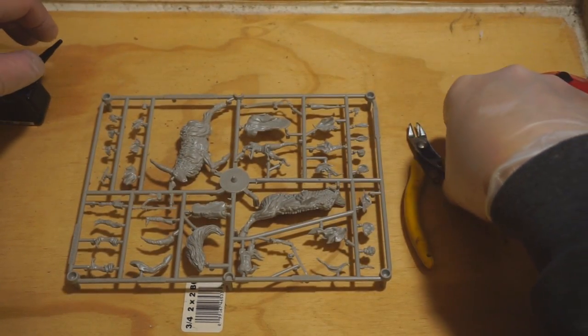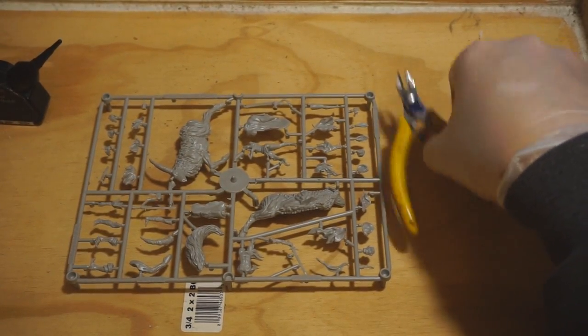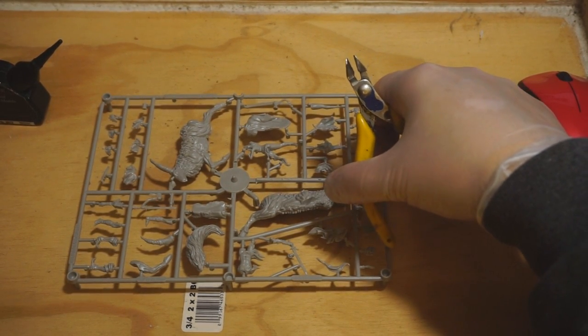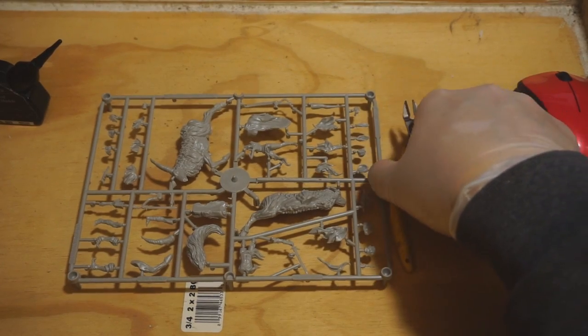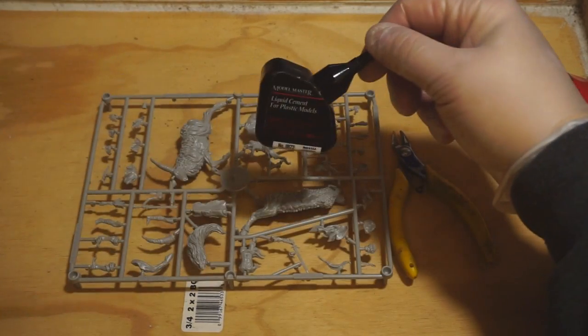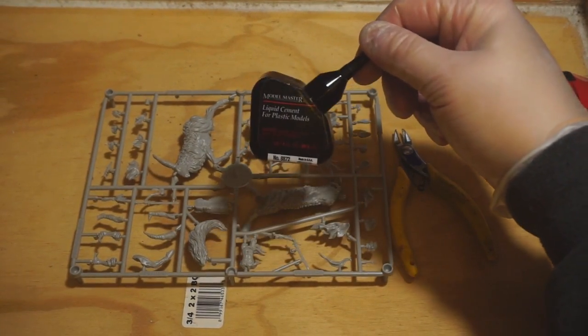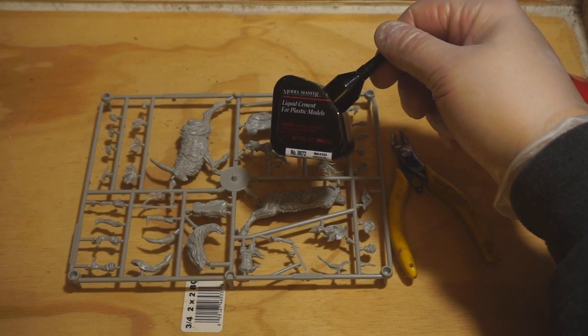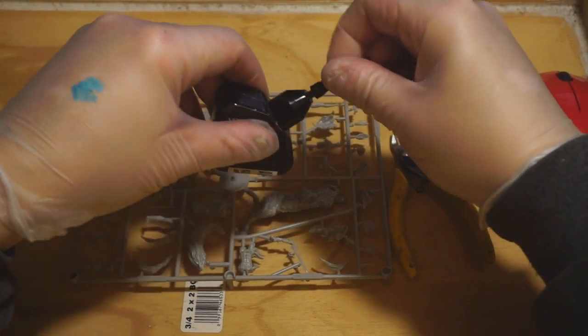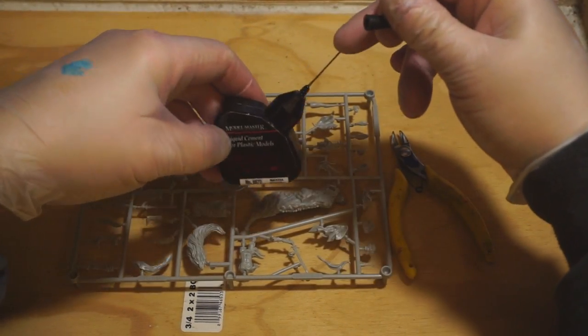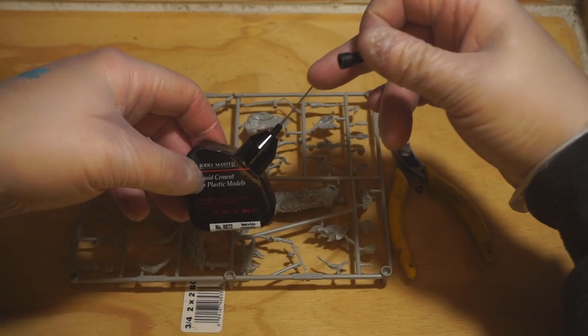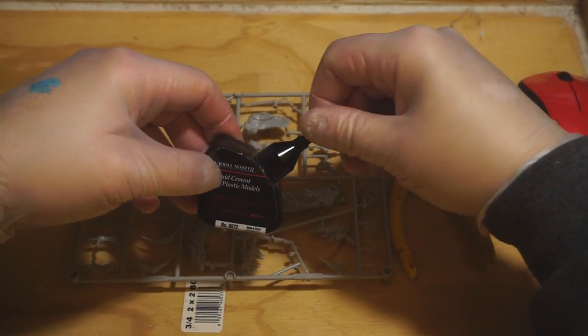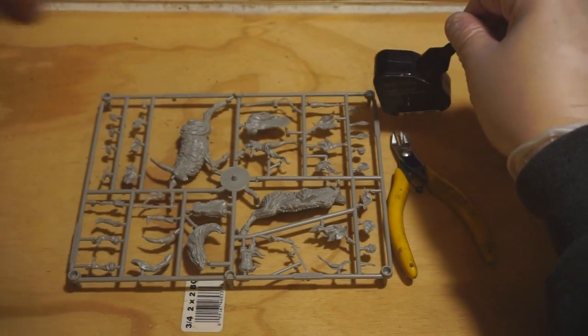So let's talk real quick about what you're going to need. First up, a pair of clippers to get the pieces off of the sprue in the first place. You're going to want some liquid model cement. I actually really like the Model Master liquid cement for plastic models because of the cool needle applicator that it comes with, but Citadel has a similar applicator for their thin plastic cement as well, and that would work just as well in this situation.